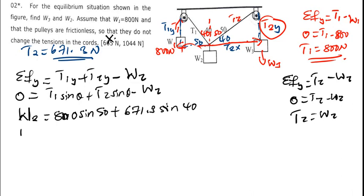So what would be our W2? So we have 800 sin 50 plus 671.3 sin 40, and the answer I am getting is 1044.3.